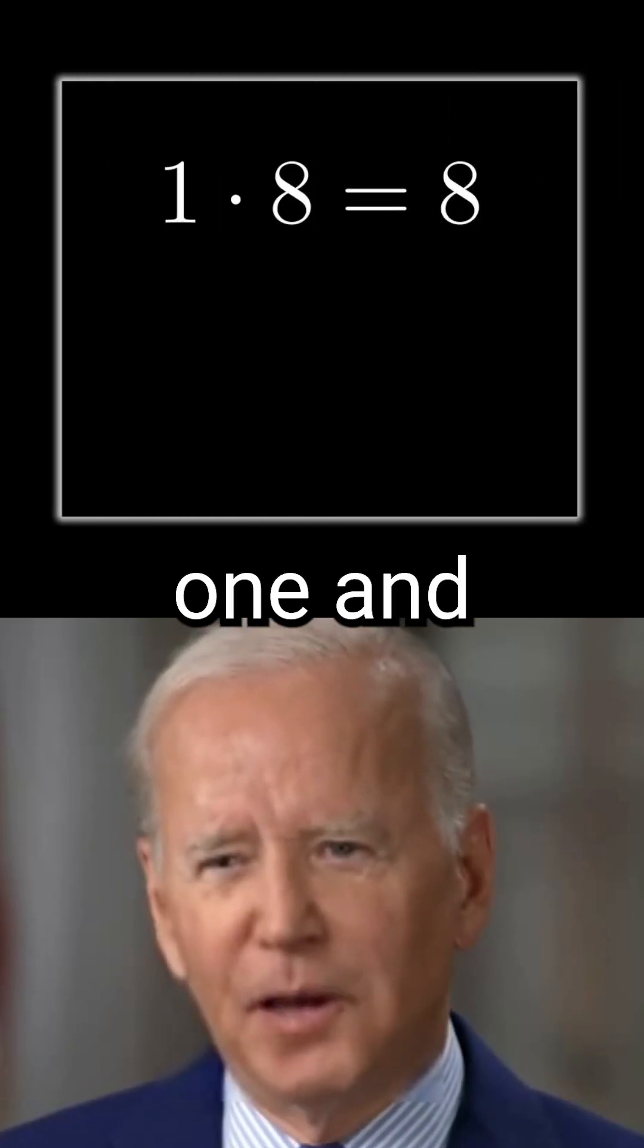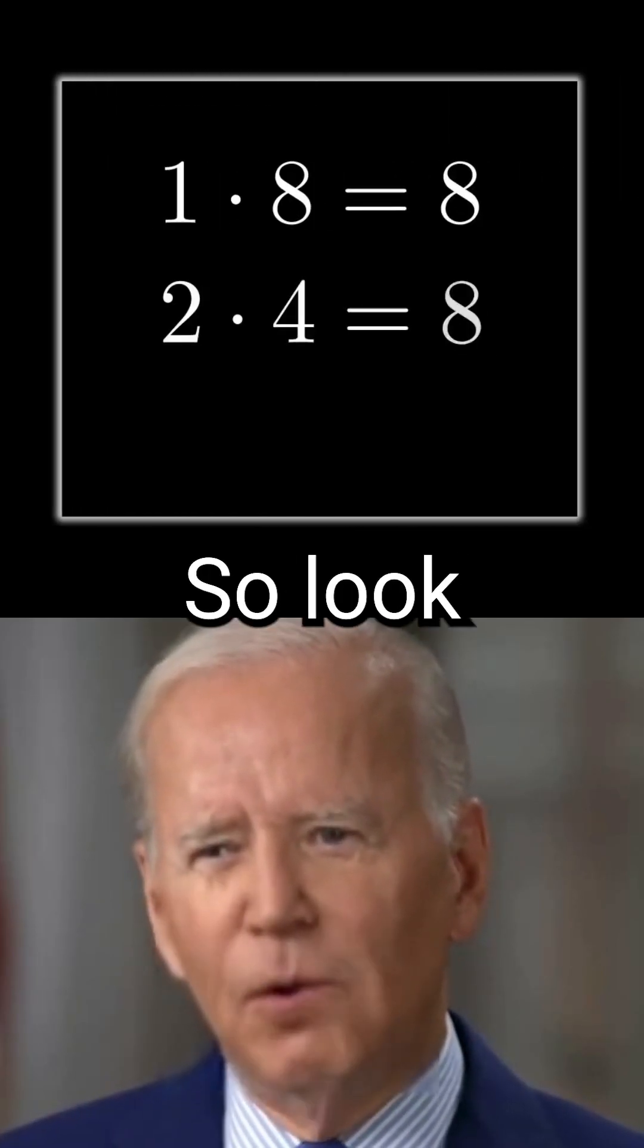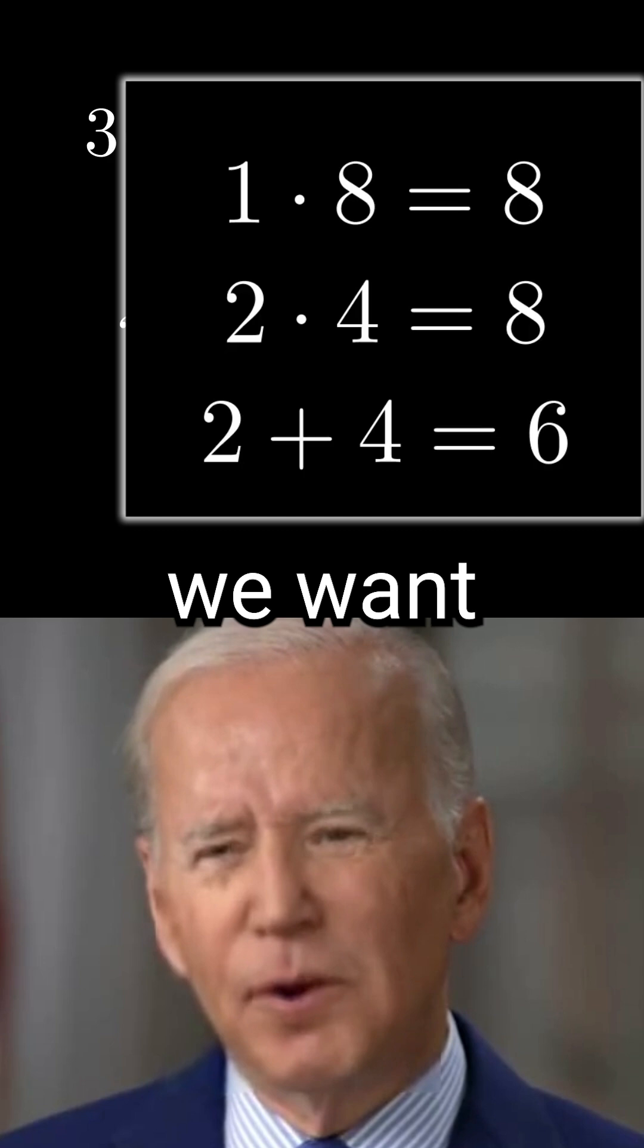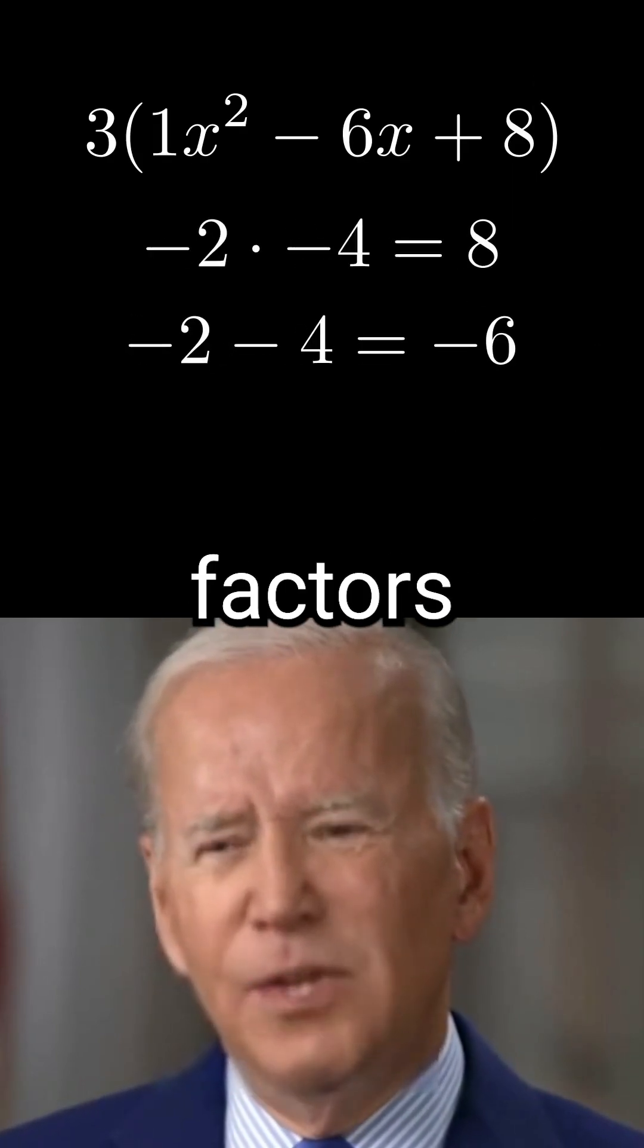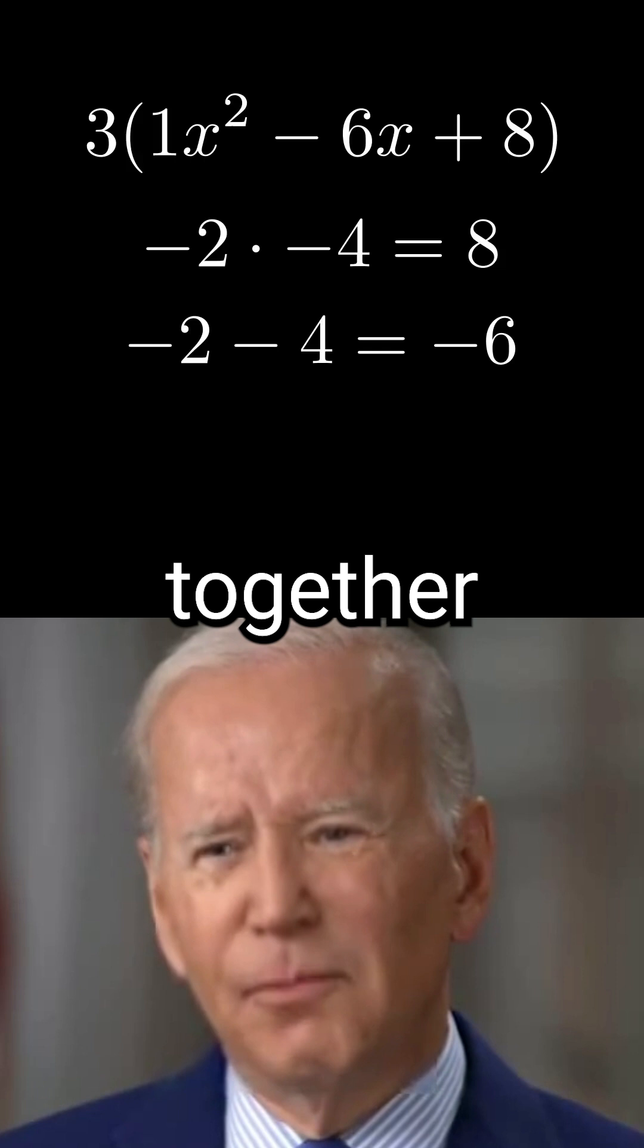Let's list the factors of 8, 1 and 8, and 2 and 4. So look at 2 and 4, those add up to 6, but we want negative 6. So we want negative 2 and negative 4, which both still are factors of positive 8 because when multiplied together, become positive.